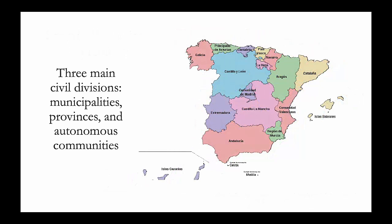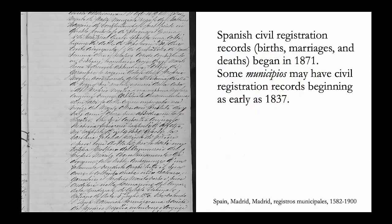Civil records are divided into three main divisions: municipalities, provinces, and autonomous communities. An autonomous community — Spanish: comunidad autónoma — is a first-level political and administrative division created in accordance with the Spanish Constitution of 1978. Spanish civil registration records for births, marriages, and deaths began in 1871. Some municipios may have civil registration records beginning as early as 1837.